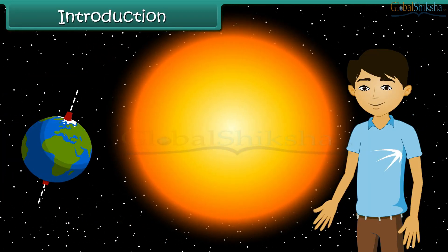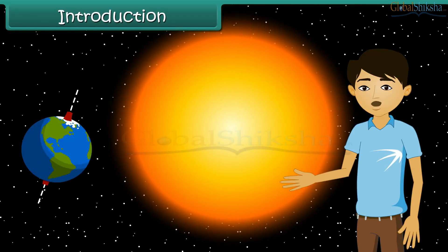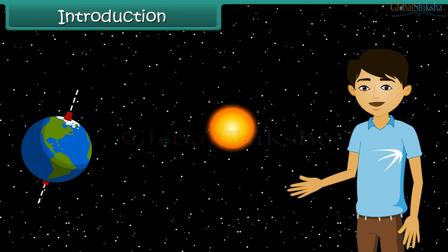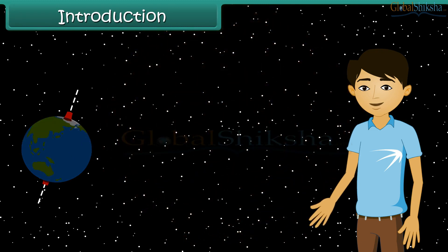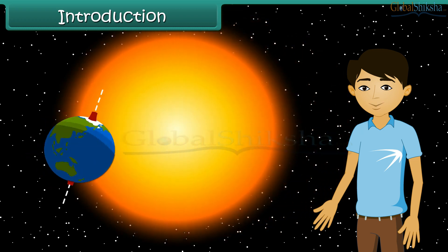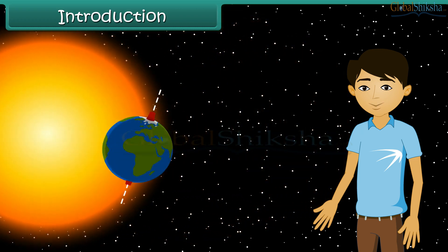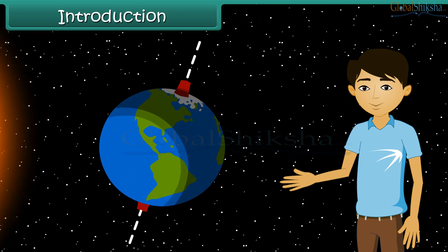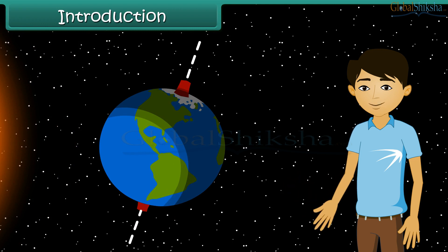Hello students, can you imagine how cold the earth would be if there were no sun? The sun is the earth's main source of heat. Only a little of the sun's heat reaches the earth; however, this is enough for life to exist on earth.